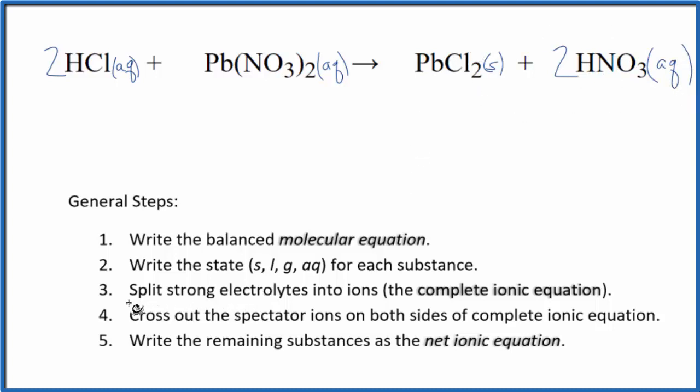Now that we have the states, we can split the strong electrolytes into their ions for the complete ionic equation. Hydrogen is group 1, 1+ ionic charge. Chloride is always negative. So we have 2 hydrogen ions and 2 chloride ions.